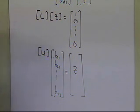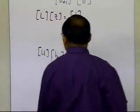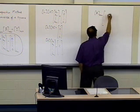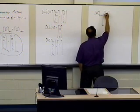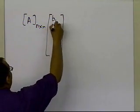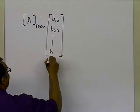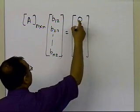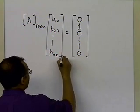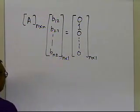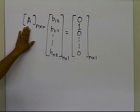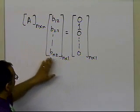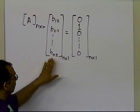Similarly, the second column of the B matrix (the inverse) is found by multiplying the A matrix by the second column of B — from the first row, second column, down to the nth row, second column — equal to the second column of the identity matrix: 0 in the first row, 1 in the second row, then zeros throughout. I follow the same methodology: decompose A into L times U (already known), solve L times Z equal to that right-hand side, then solve U times X equal to Z to get the second column.